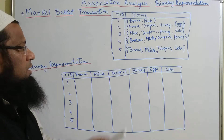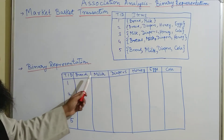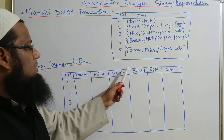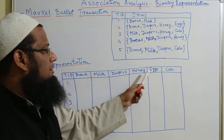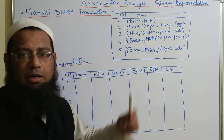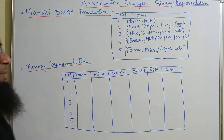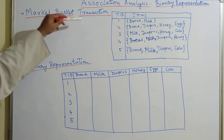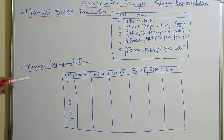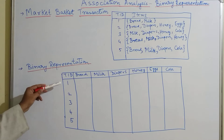Here we found out that we have bread, milk, diapers, honey, eggs, and cola. These are the items when you are making the market basket transaction binary representation.